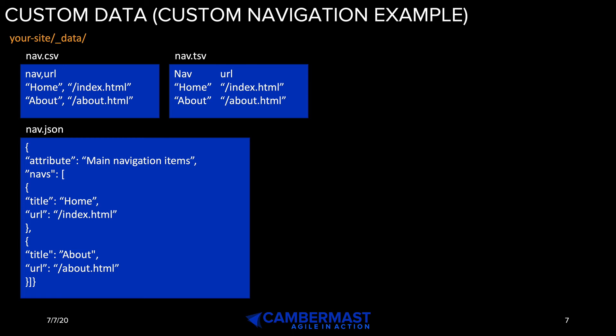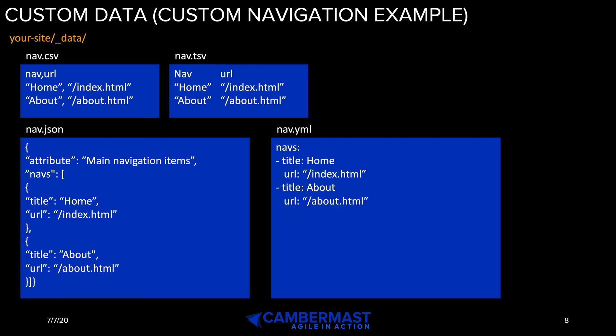The last data type Jekyll supports is a YAML file. You'll remember YAML from the _config.yml file at the root of your Jekyll folder. You can also create your own YAML files containing your own data. Here I have a nav.yaml file with a number of navigation items, and you can see it's all laid out very nicely. Of these four formats, I like YAML most. Some of my site I actually created with JSON, and at some point I'll probably convert it to YAML — I really wish I had, because I spent a lot of time getting things right with my JSON files.